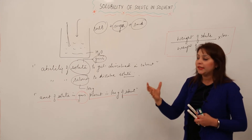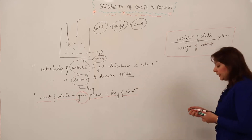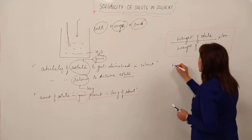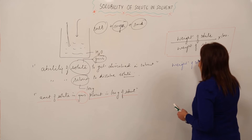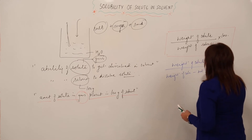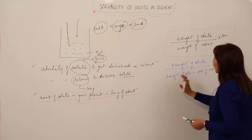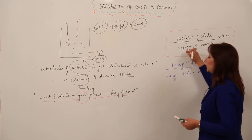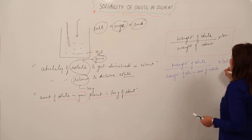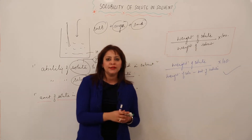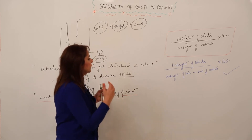If you don't have the weight of the solvent, we can convert this relation to: solubility = (weight of solute ÷ (weight of solution − weight of solute)) × 100, because weight of solution minus weight of solute gives the weight of the solvent. Using either relation, we can find the solubility of a solute in a solvent.